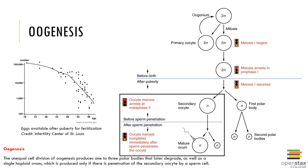Each month thereafter, some of the primary oocytes are stimulated to undergo further development. Meiosis one is then completed, yielding a secondary oocyte and a polar body. Once a month, a secondary oocyte is ovulated into the fallopian tube. The secondary oocyte is suspended in metaphase two and will not finish meiosis unless fertilization occurs. Meiosis two is completed if and only if fertilization occurs; the polar bodies degenerate and die.